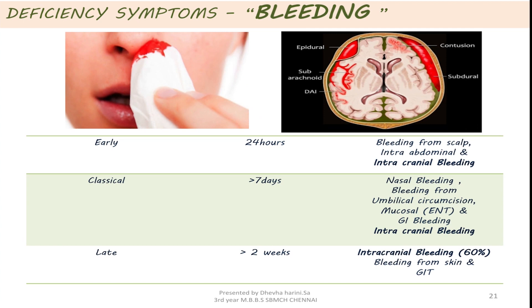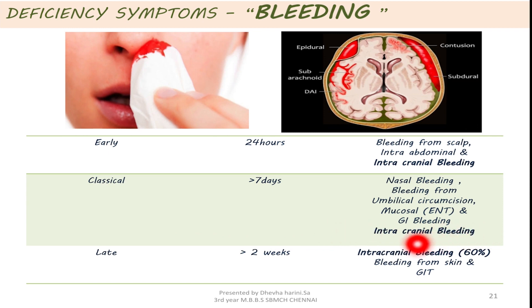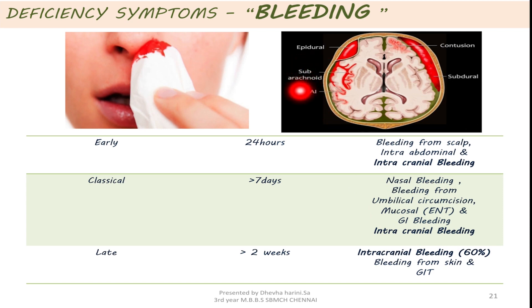Deficiency symptoms: one of the most common and important symptoms is bleeding, which is divided into three phases. In the early phase within 24 hours, you can see bleeding from the scalp, intra-abdominal and intracranial bleeding. In the classical phase within seven days, you can see nasal bleeding and bleeding from the umbilical circumcision, mucosal, gastrointestinal and intracranial areas. In the late phase, before two weeks, you can see intracranial bleeding, bleeding from the skin and bleeding from the GIT. In all three phases there is involvement of intracranial bleeding which can be epidural, subarachnoid — due to contusion — or subdural.